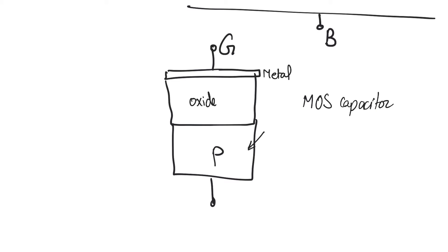The semiconductor is the bottom P-type, usually a lightly doped P-type silicon. The oxide is silicon dioxide, which is a very good insulator with a very large band gap. The top is theoretically a metal plate, but in practical applications it is usually made using heavily doped polysilicon. The way that heavily doped silicon behaves is pretty close to the way a metal behaves, so for our discussion we will assume the polysilicon gate behaves like a metal.